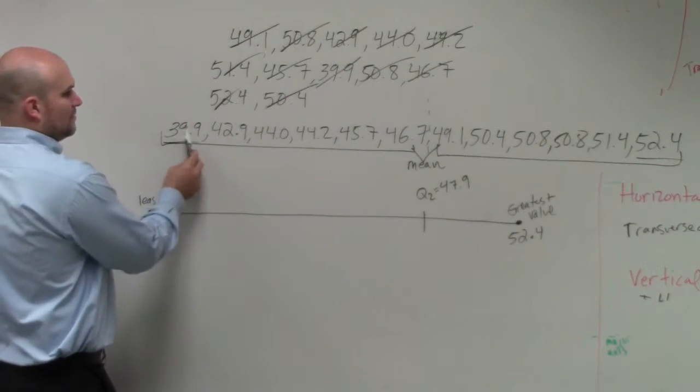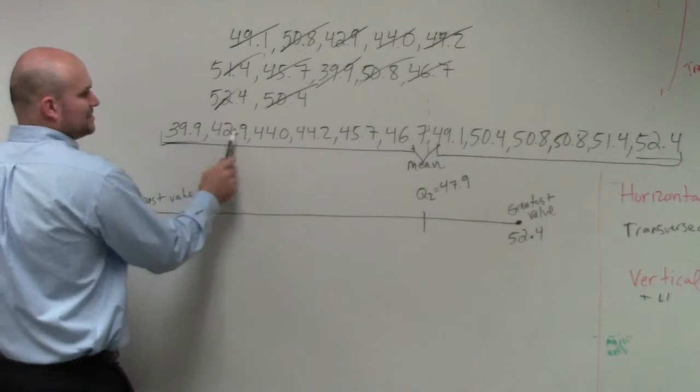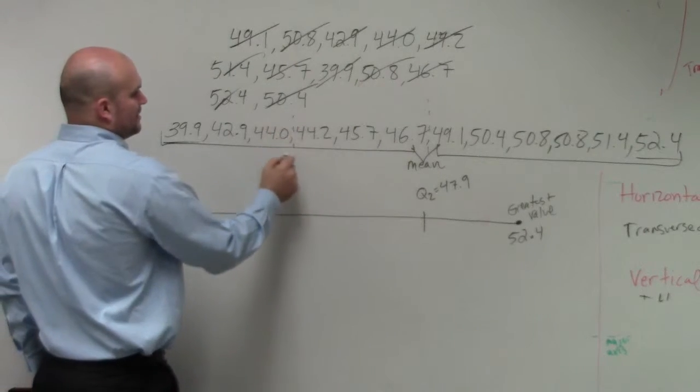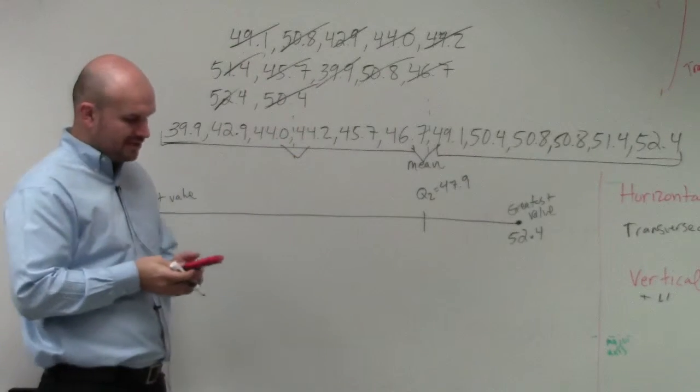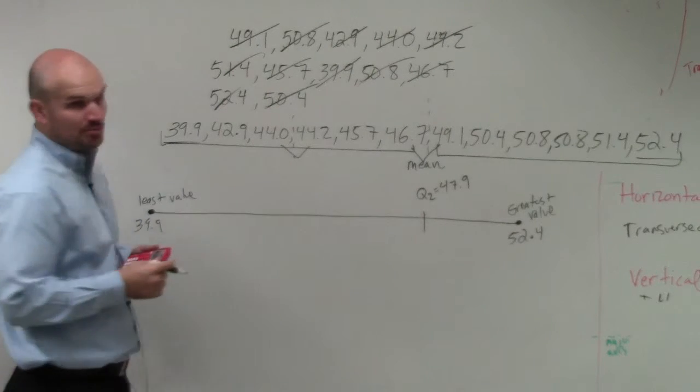So therefore, again, we're not going to include our mean value, but we'll include 1, 2, 3, 4, 5, 6. So again, I need to find the middle number, which is going to be between these two. So I do 44.0 plus 44.2 is going to be 44.1, which maybe we can say is 44.1.